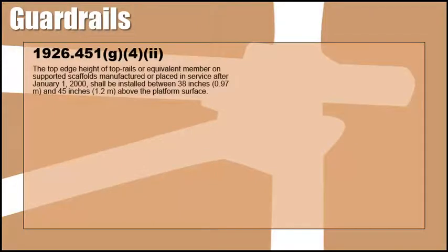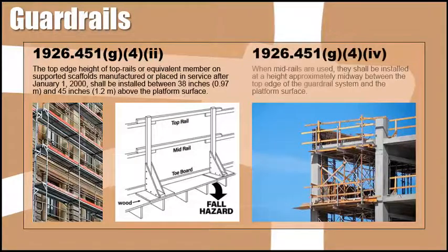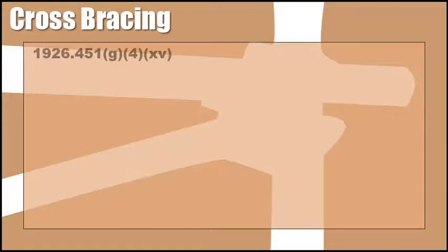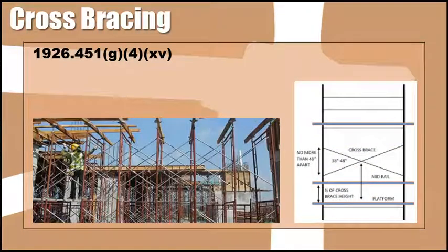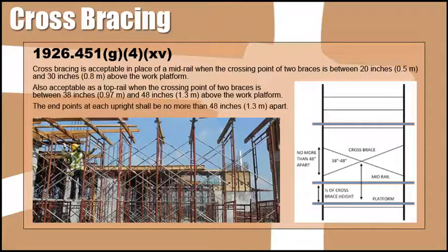The top rail is the highest component of a guardrail system. It is to be installed between 38 and 45 inches above the scaffold platform. When mid-rails are used, they must be installed midway between the top edge of the guardrail system and the platform surface. Regulations 29 CFR 1926.451(g)(4)(xv) state that cross-bracing can serve as a top rail or a mid-rail depending on where the two braces cross. If they cross between 20 and 30 inches from the walking surface, it can serve as a mid-rail. If they cross between 38 and 48 inches, they can serve as a top rail, but never both — and logically, it would be impossible for two straight cross braces to cross in more than one location.